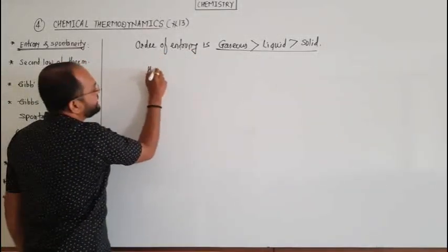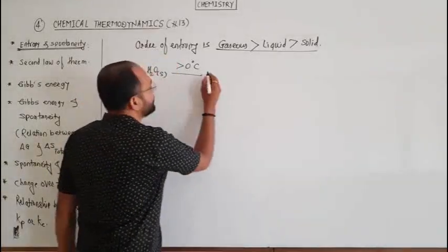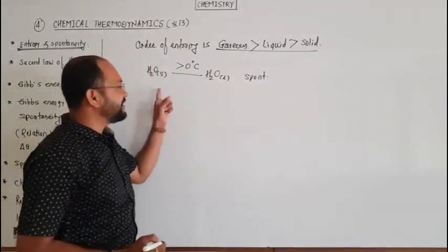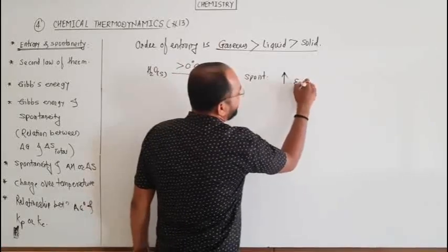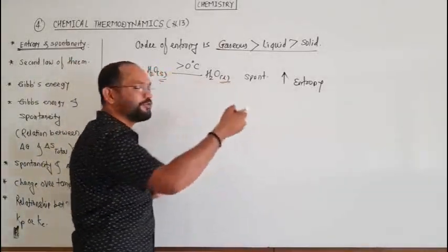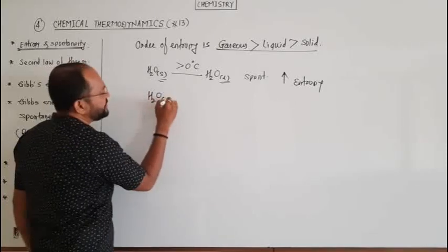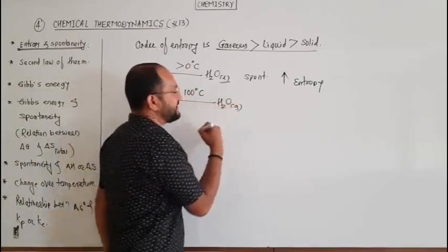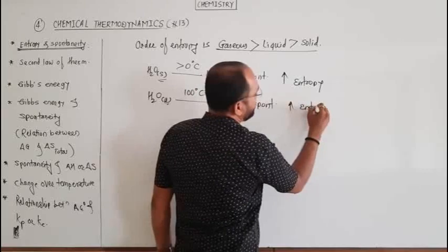Consider melting of ice at a temperature greater than 0 degrees Celsius to form liquid water. This is a spontaneous process. Melting of ice to form liquid water is the spontaneous process in which the entropy of the system increases. If you consider vaporization of liquid water at 100 degrees Celsius to form gaseous water vapors, it is also a spontaneous process in which entropy of the system increases.